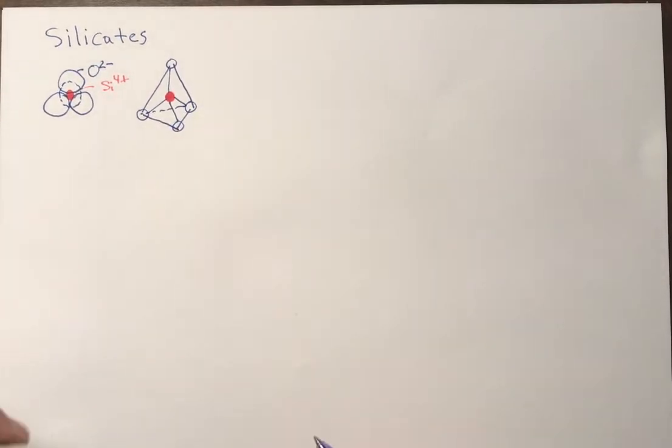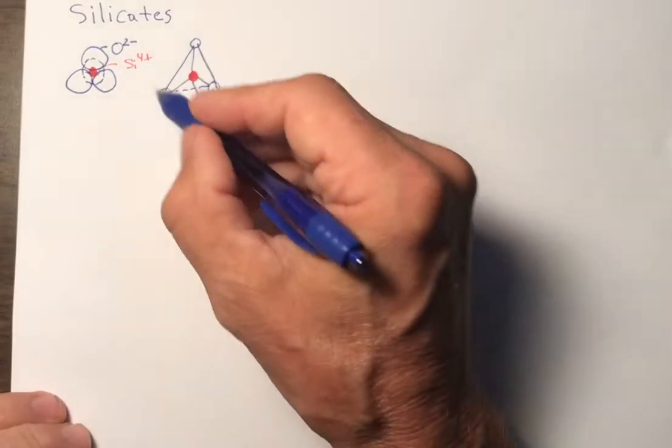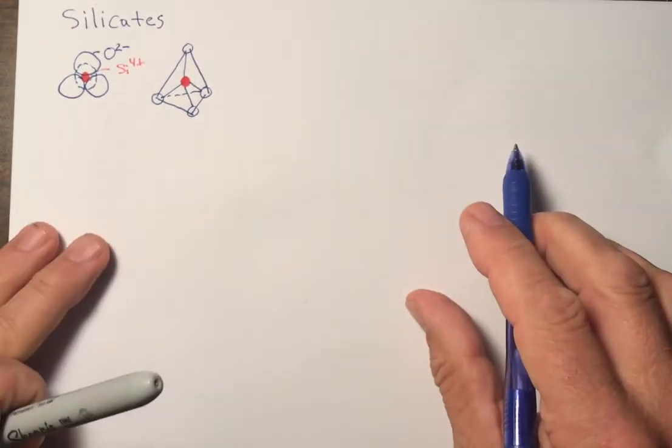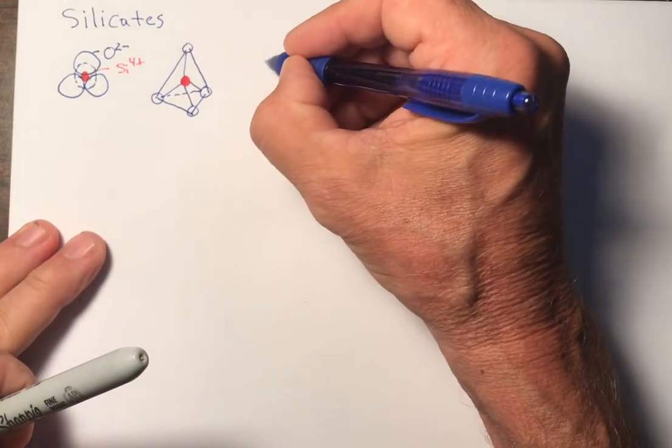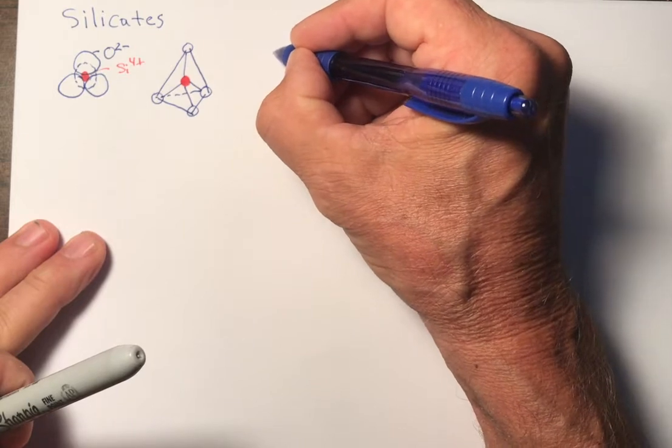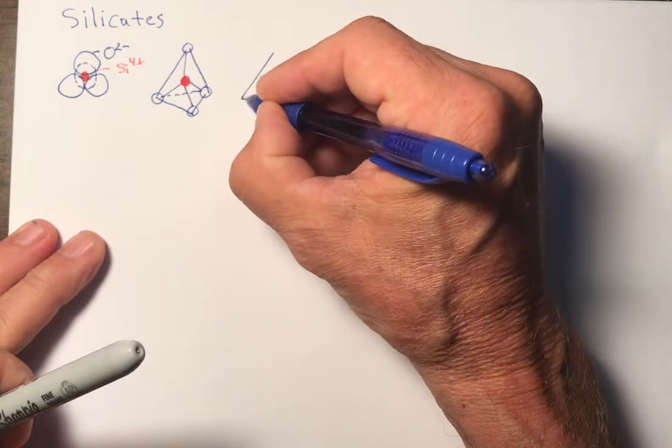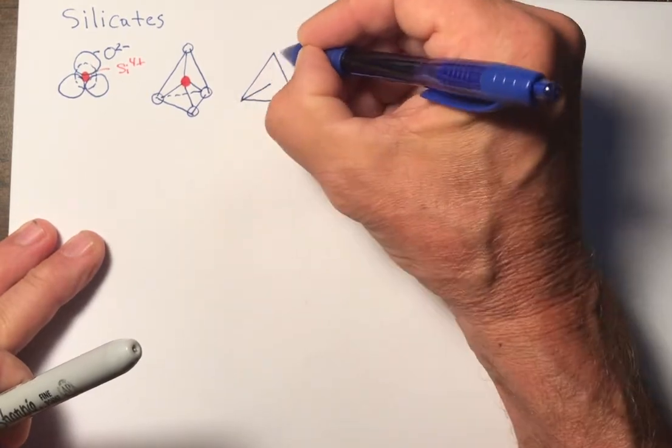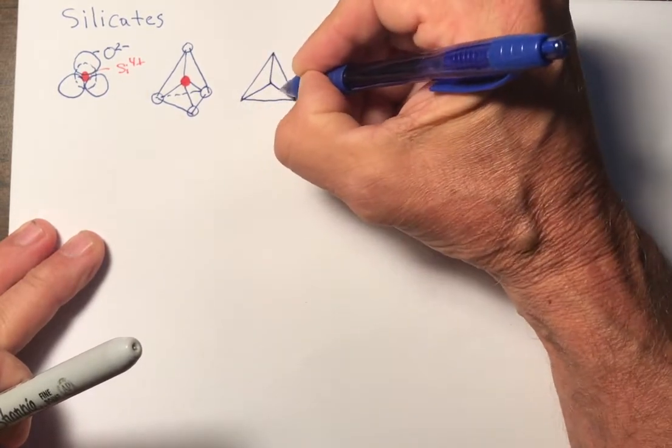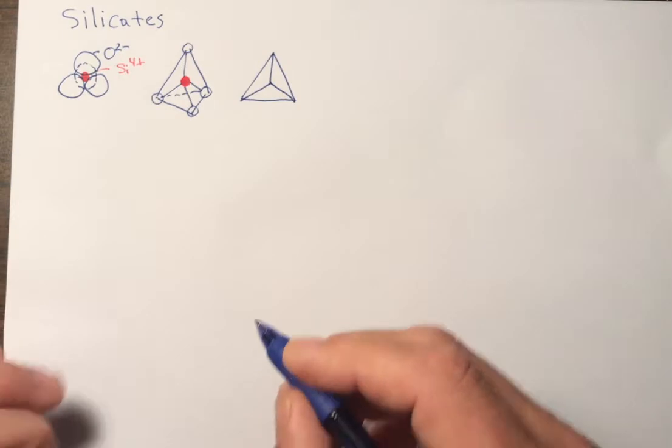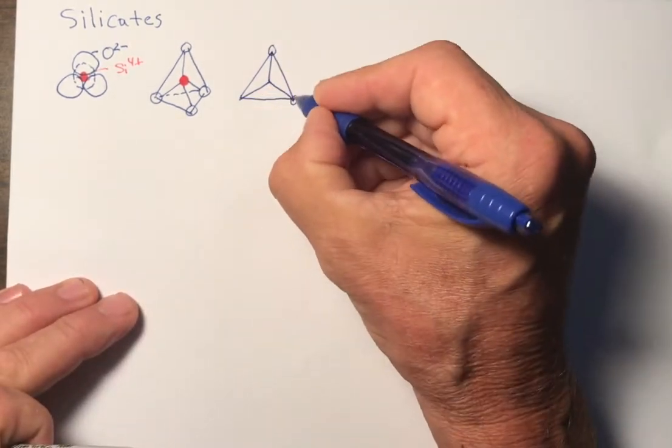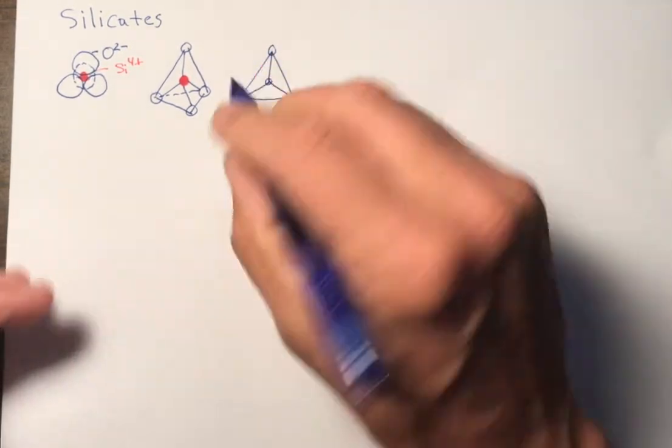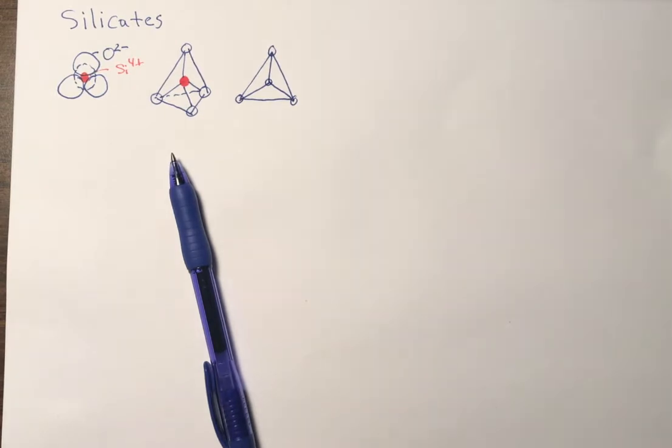And the final way is to simplify the schematics of this tetrahedron into a triangle where we're looking down at the top view. It looks like something like this. And there's the apex of the tetrahedron. And now we have oxygens at each one of these. And then in the center we have the silicon.